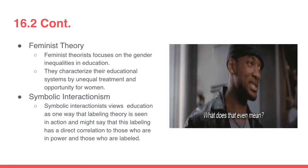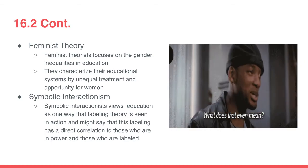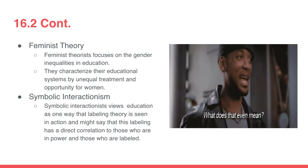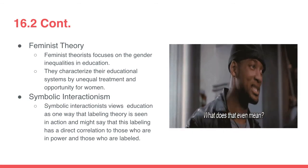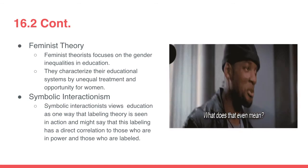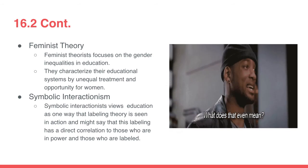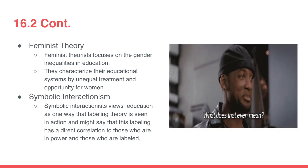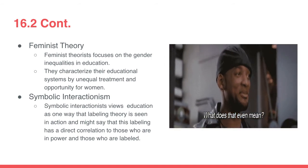Next, we have the feminist theory. Feminist theorists focus on the gender inequalities in education. They characterize educational systems by unequal treatment and opportunity for women. And lastly, we have symbolic interactionism. Symbolic interactionists view education as one way that labeling theory is seen in action, and might say that this labeling has a direct correlation to those who are in power and those who are labeled.